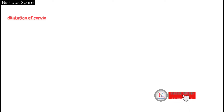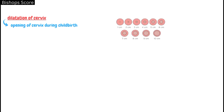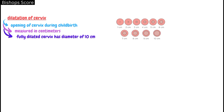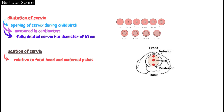Now we will look at these parameters one by one. The first is dilatation of the cervix. The cervix, which is the lowest portion of the uterus, opens when a woman is giving birth. The opening of the cervix is called cervical dilatation. Dilatation is measured in centimeters; a fully dilated cervix has a diameter of 10 centimeters.